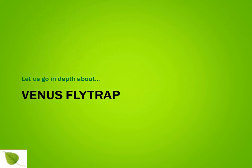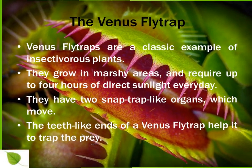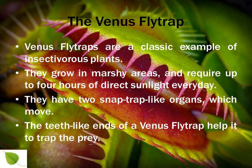Now let us learn in depth about one insectivorous plant — the Venus flytrap. Venus flytrap is a classic example of insectivorous plants. They grow in marshy areas and require up to four hours of direct sunlight every day. They have two snap trap-like organs which move. The teeth-like ends of a Venus flytrap help it to trap prey. Did you know that Venus flytraps are actually leaves?